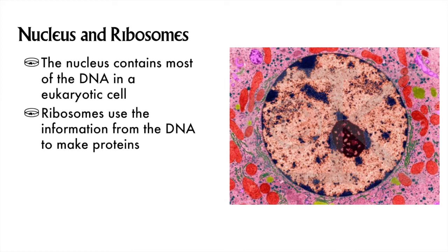Now to get into the parts of a cell. We begin our tour with the nucleus. This is where almost all of a eukaryotic cell's DNA is found — almost all, like 99.99% of it. I'll tell more about the ribosomes here also.